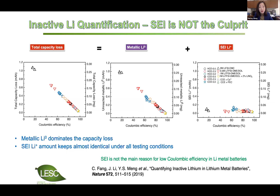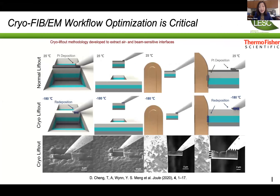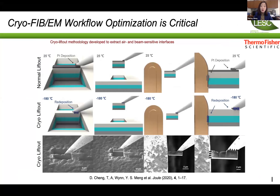A major achievement from the Battery 500 consortium — Dr. Xiaojie presented this at ECS a couple of weeks ago, and I borrowed her slides — is a real 2 Amp-hour pouch cell with significantly improved cycling ability for lithium metal cells. To achieve 99.9% efficiency and enable a few thousand cycles, we need three-nines efficiency.